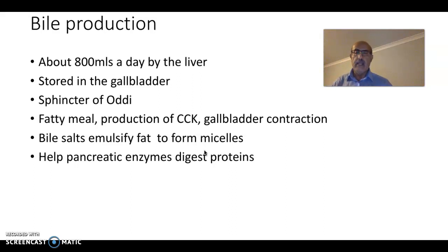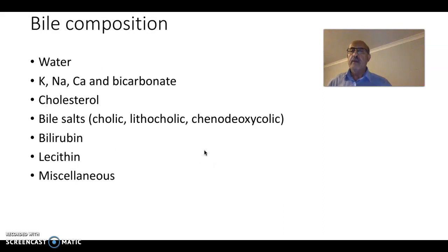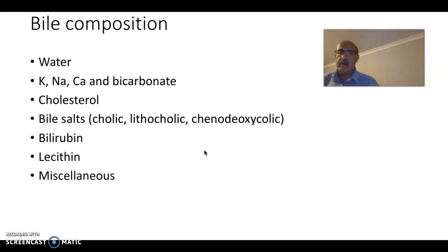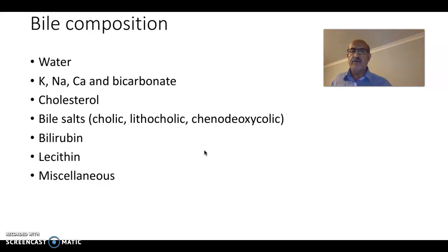Bile also helps pancreatic enzymes digest protein further down the gastrointestinal tract. You need to know the composition of bile: water and electrolytes are the most abundant components, with the usual sodium, potassium, calcium, and bicarbonate. The solutes include cholesterol, bile salts, bilirubin, and lecithin, plus miscellaneous materials — all produced as part of the excretory and detoxifying function of the liver.